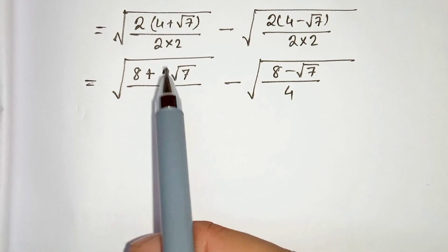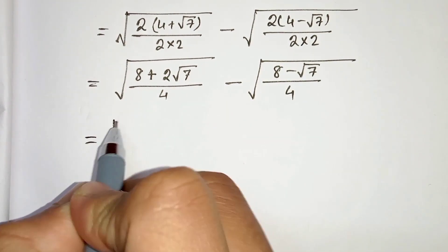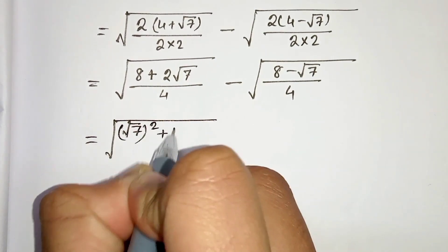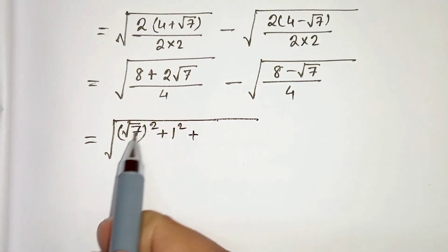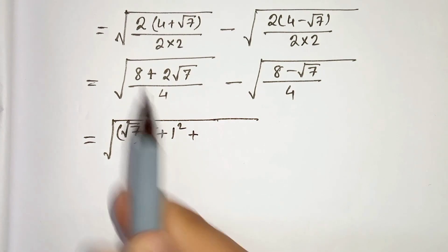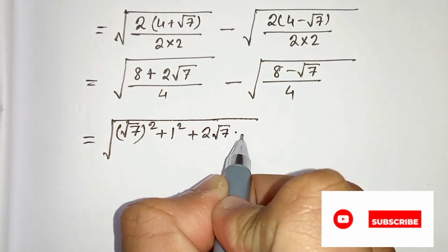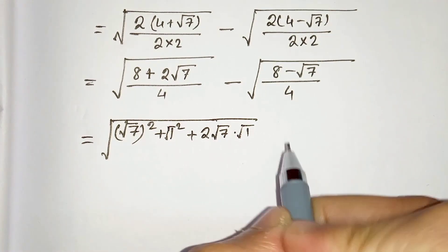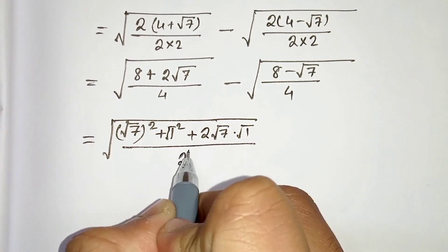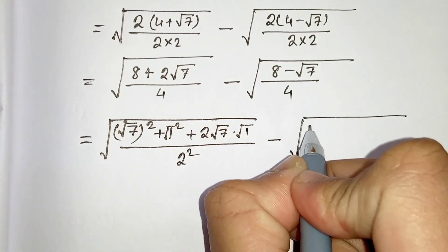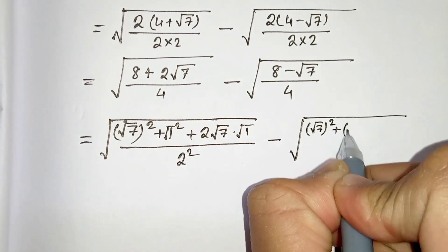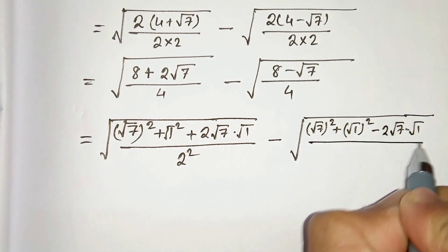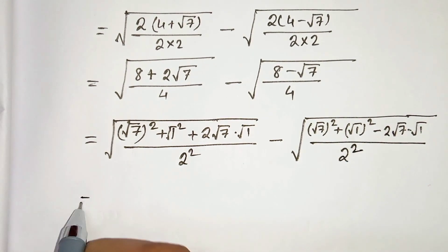Now let's simplify. We can write 8 as root 7 squared plus 1 squared, since root 7 squared is 7 and 1 squared is 1, which gives 7 plus 1 equals 8. And here we can write 2 times root 7 times root 1, where root 1 squared is 1, and in the denominator we will get 2 squared. Again from the second term we can write root 7 squared plus root 1 squared minus 2 times root 7 times root 1, and the denominator is 2 squared.